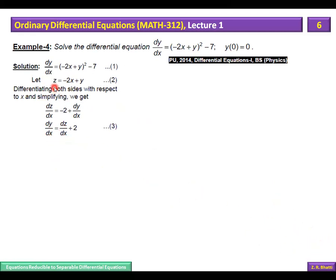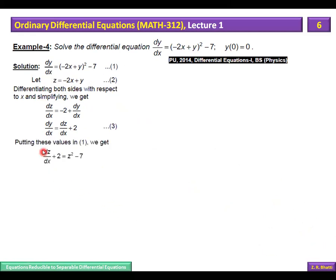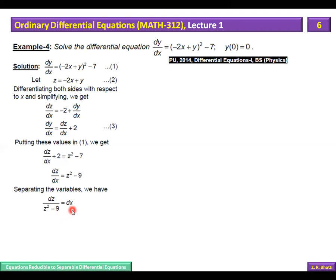We have two values: z = -2x + y, and the value of dy/dx derived from it. Substituting gives dz/dx + 2 = z² - 7. Rearranging: dz/dx = z² - 9. The variable is separate, so we write dz/(z² - 9) = dx.